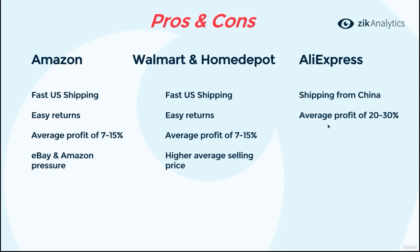Here's an example: if you make $10,000 revenue dropshipping from AliExpress to eBay, you will make around $3,000 profit. To make the same profit with Amazon, Walmart, or Home Depot at 10% average profit, you'd need to generate $30,000 revenue. Think about how many transactions you need to process for $30,000 versus $3,000 revenue — managing a store at $30,000 revenue is harder. Shipping from local suppliers is faster, but the average profit on AliExpress and Chinese suppliers is much higher, giving you more room for mistakes and helping you build a more manageable business.